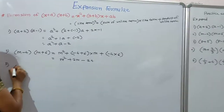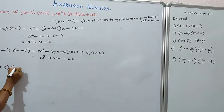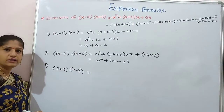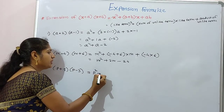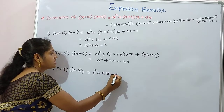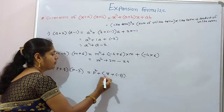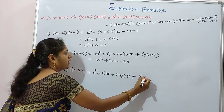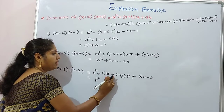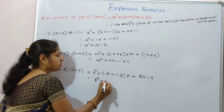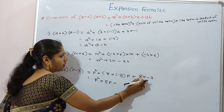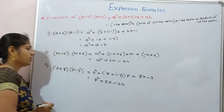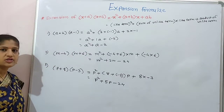Third example: p plus 8 multiplied by p minus 3. Here, p is the like term and 8 and 3 are unlike terms. So: p square, plus the sum of unlike terms 8 plus minus 3 equals 5, multiplied by like term p, plus the product of unlike terms 8 into minus 3 equals minus 24. Answer: p square plus 5p minus 24.